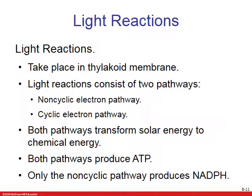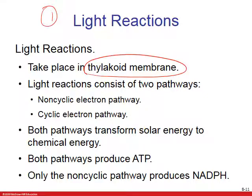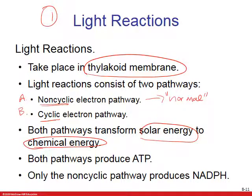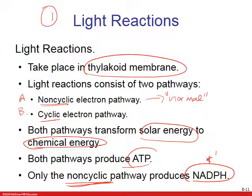Here's the first set of reactions — the light reactions — happening in the thylakoid membrane, and there are two pathways: non-cyclic and cyclic. Both pathways take solar energy and turn it into chemical energy, and both produce ATP. However, only the non-cyclic pathway produces NADPH, which is necessary for the Calvin cycle.